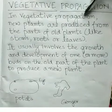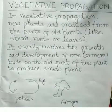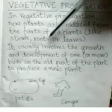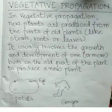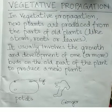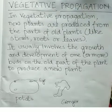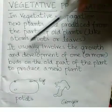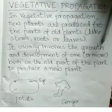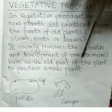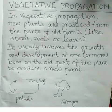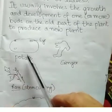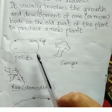Vegetative propagation is a process where new plants are produced from parts of old plants, like stems, roots, or leaves. It usually involves the growth and development of one or more buds on the old part of the plant to produce a new plant.